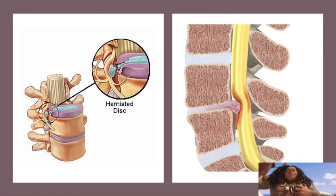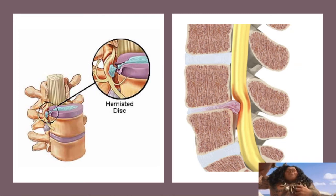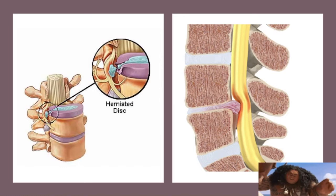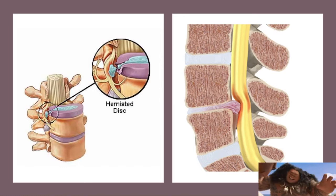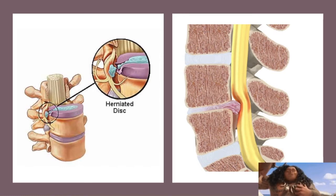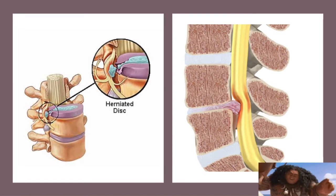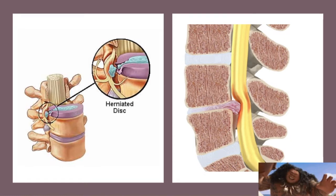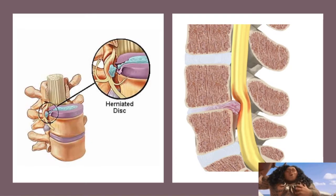Here is another image of the herniated vertebral disc. As you can see, the disc is already compressing on the spinal cord, leading to inflammation and later on ischemia of the spinal cord.